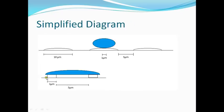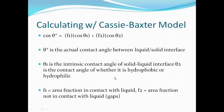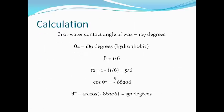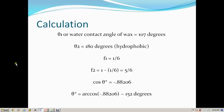In this case, F1 is the contact portion and F2 is the gap fraction. Diving into the calculation: θ1 is 107 degrees, θ2 is 180 degrees, F1 is 1/6, and F2 is 5/6 — the fraction not in contact with water. After calculating, θ* (the actual contact angle) is 152 degrees, making it super hydrophobic.